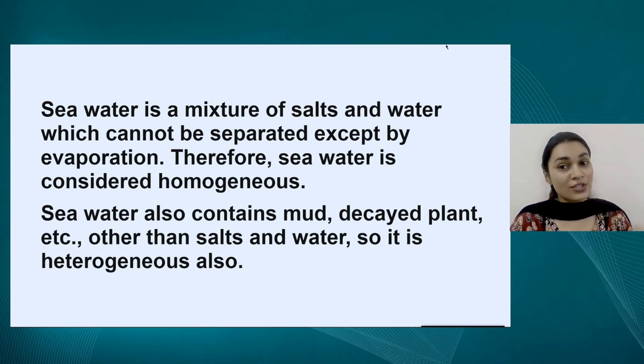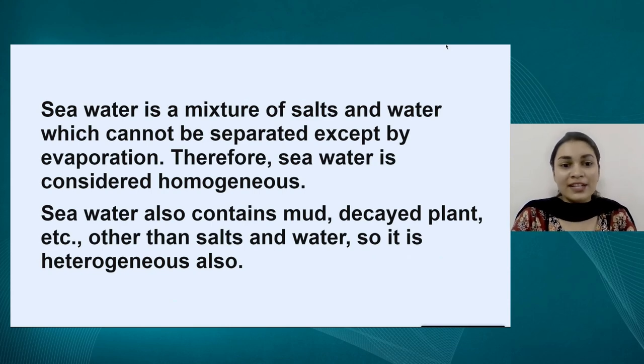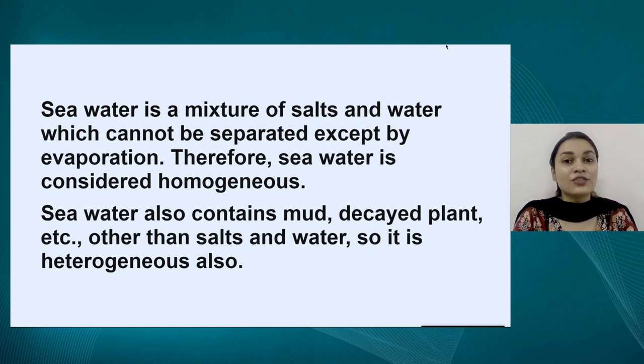Before we leave, would you like to discuss the homework answer as well? Here is the answer: sea water is a mixture of salts and water. Because the salts are dissolved in water, it can be considered a homogeneous mixture. But apart from salts, there are also many other components in sea water such as mud and decayed matter like dead plants and dead animals. These components are not evenly distributed in sea water, so because of them, sea water can also be classified as heterogeneous.